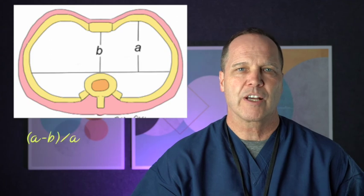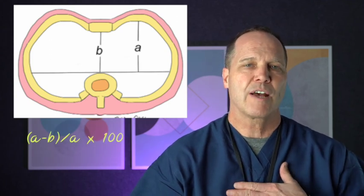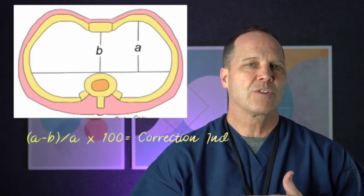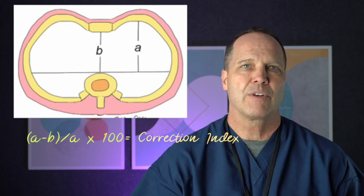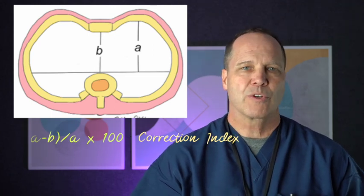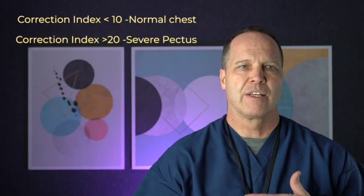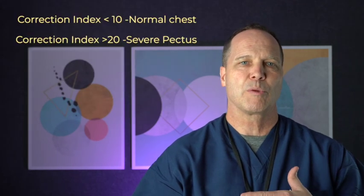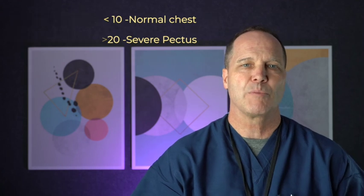There's also something called a correction index, which measures the percent you'd have to elevate the sternum to make it straight. If you have a correction index of less than 10%, for example, that will appear to be a normal chest. But anything over 20%, where you need to bring the chest out 20% of its current location to make it flat, is considered a severe pectus excavata.